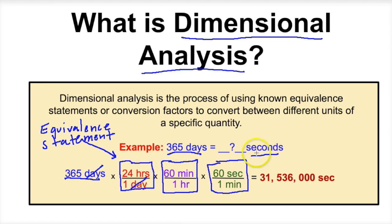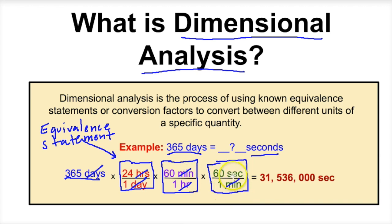But we don't want hours — we're trying to find out how many seconds are in 365 days. So we need to break hours down with a second equivalent statement. We know that there are 60 minutes in one hour. The unit hour on top cancels with the unit hour on bottom, leaving us with minutes. But we don't want minutes; we want seconds. So we come up with a third equivalent statement: 60 seconds in one minute. The unit minute on top cancels with the unit minute on bottom, leaving us with seconds. Now we take a calculator and compute 365 times 24 times 60 times 60.